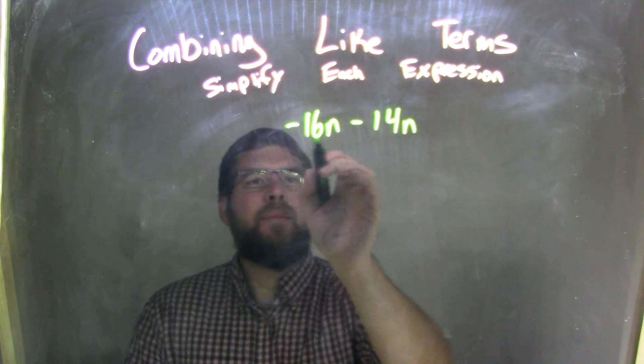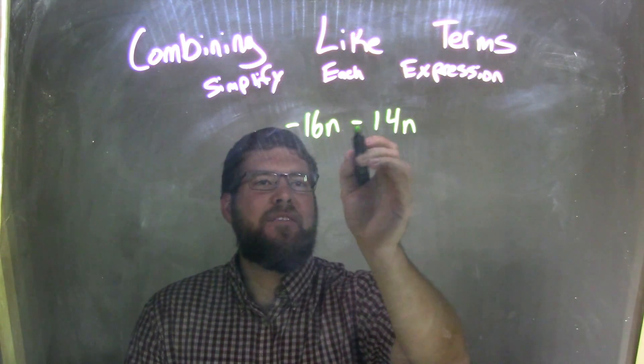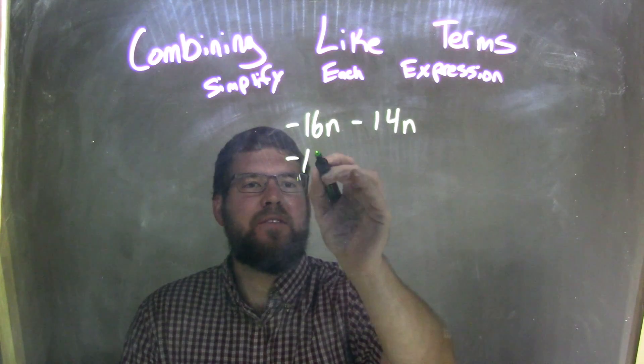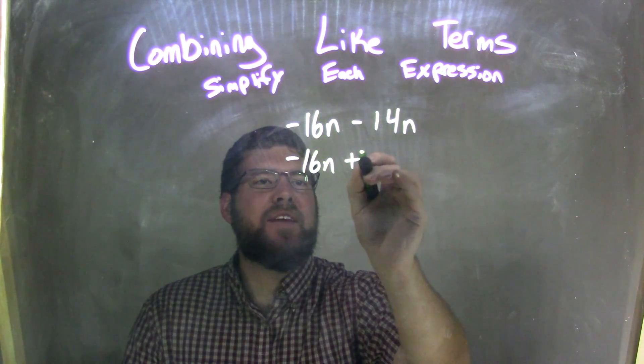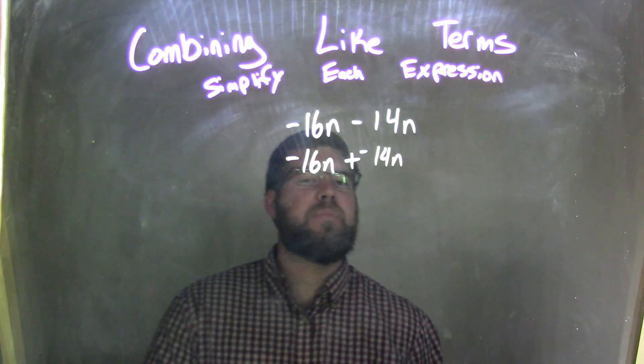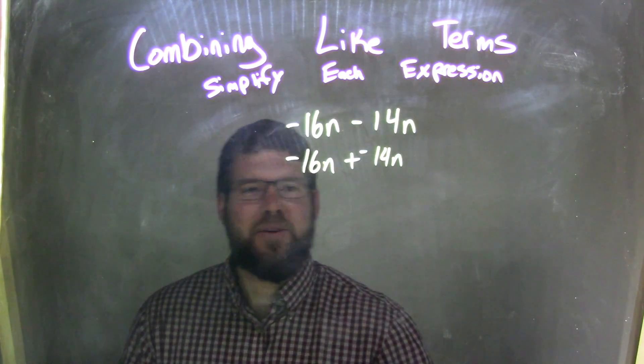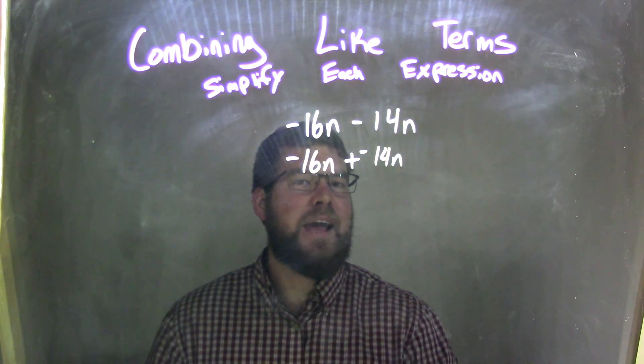I find it easier if I take my subtraction and add a negative. If I have my subtraction here, I'm going to rewrite that to be negative 16n plus a negative 14n. Now, 16 plus 14, you should be able to do in your head as 30, so we have negative 30n.